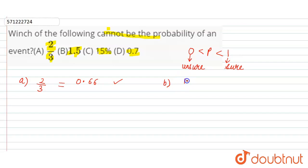Now in the B part, 1.5. 1.5 is greater than 1, so it cannot be the probability of an event.